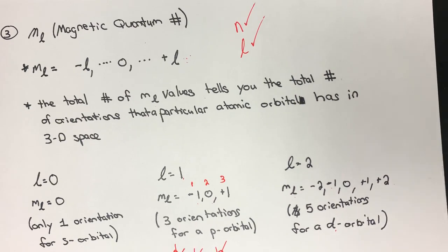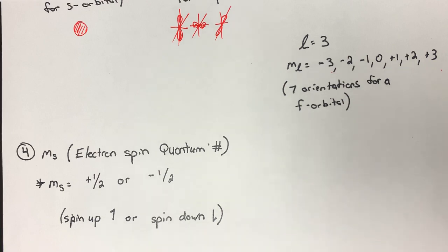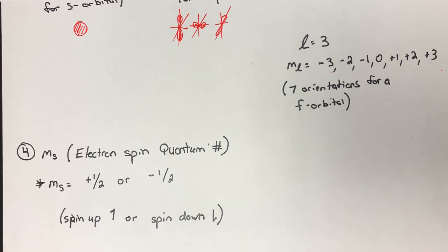The last quantum number, m sub s, is pretty easy to digest. This is the electron spin quantum number. It can have allowable values of positive one-half or negative one-half, literally describing the spin associated with an electron — sometimes described as clockwise or counterclockwise. This fourth quantum number allows us to adhere to the Pauli exclusion principle. If two electrons have the same three previous quantum numbers, this fourth one will differentiate them, allowing us to uniquely describe a single electron.